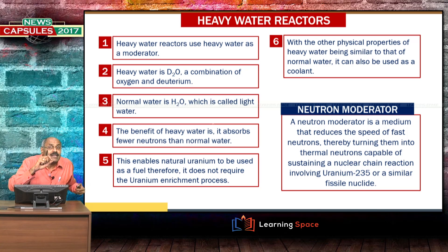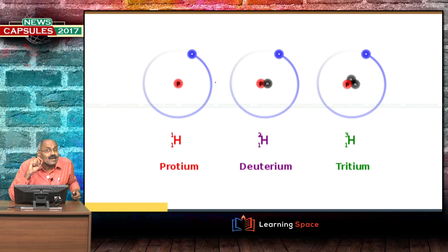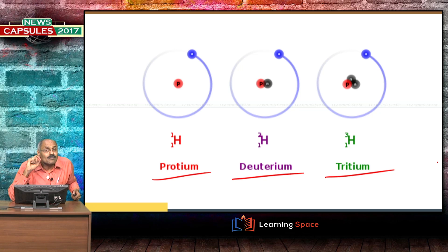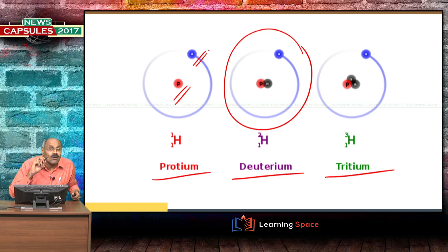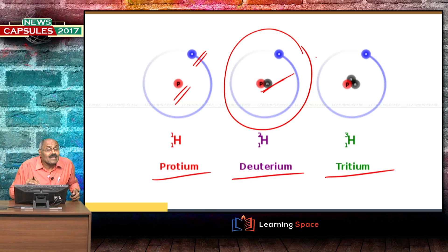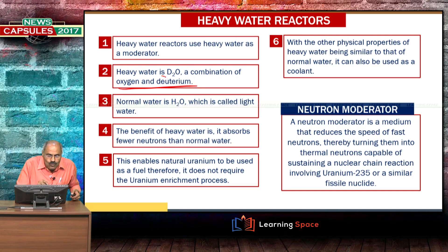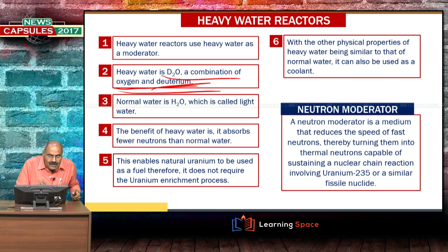What is heavy water? Heavy water is nothing but oxygen and deuterium — D2O. Deuterium is an isotope of hydrogen. In normal hydrogen, there is only one proton and one electron. Deuterium is an isotope of hydrogen which also contains one neutron. So D2O — deuterium and oxygen — is heavy water.